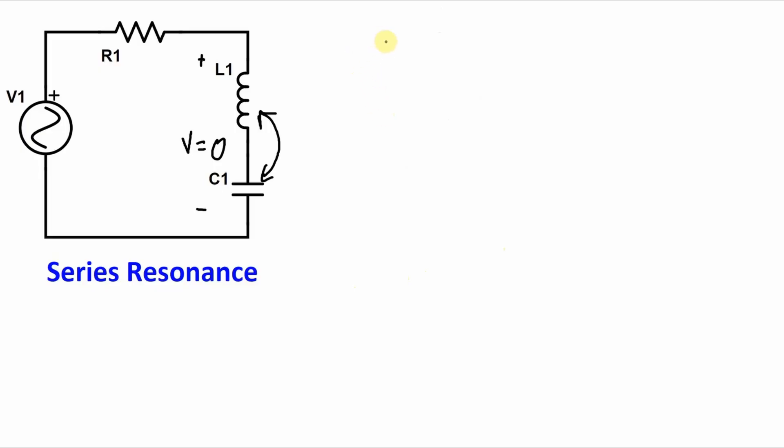Now let's look at what happens with power in the circuit. Well, power of the resistor, the power that's used by the resistor is equal to I squared times R. So that's what's going to be used up by the resistor. Now the reactive power of the inductor is I squared times XL. And the reactive power of the capacitor is I squared XC.